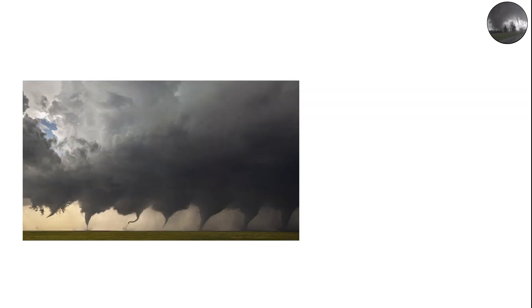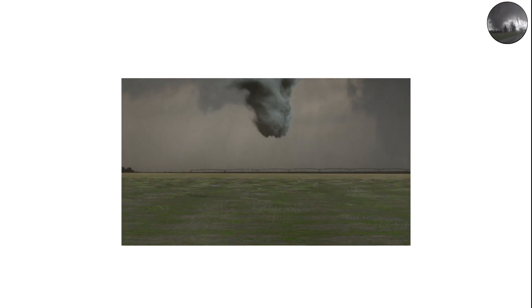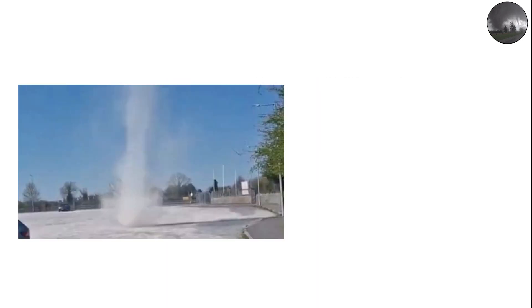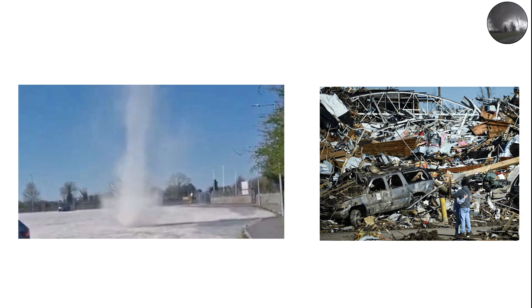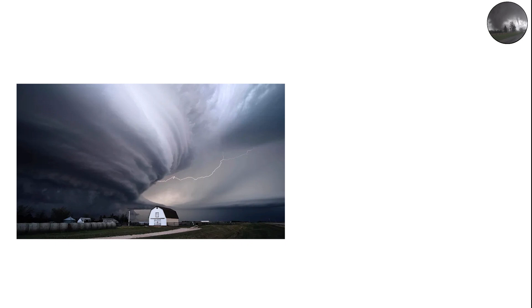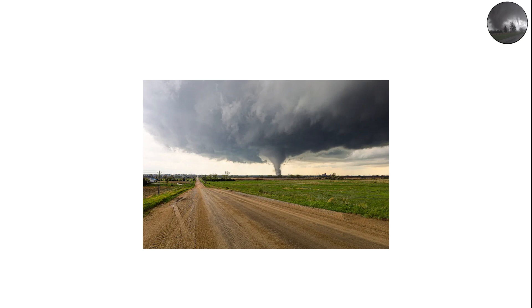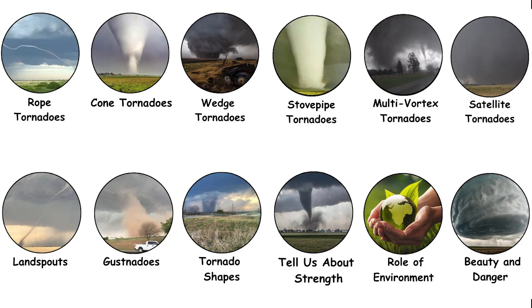Multi-vortex structures occur when small-scale rotations, called subvortices, form inside the main circulation. Each of these mini-tornadoes can produce extreme localized damage, even stronger than the average wind speed of the larger funnel. That's why you sometimes see one house completely destroyed while another right next to it is barely touched — it depends on whether one of those subvortices passed directly over it.